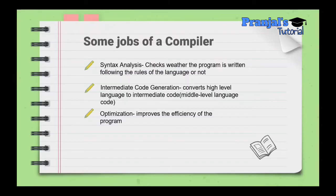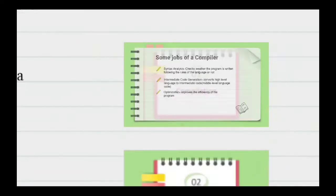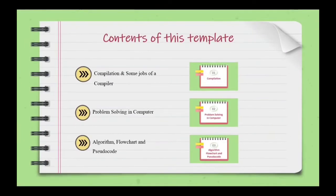So to summarize, the compiler has three jobs: first, syntax analysis; second, intermediate code generation; and third, optimization. Next topic is problem solving in computer.